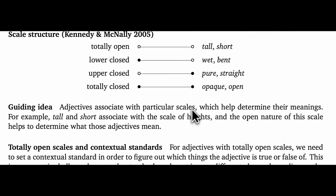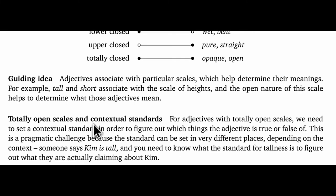So those are the core scale structures. Let's start thinking about how all this will interact with vagueness, starting with the adjectives that have totally open scales, like tall and fast. For the totally open cases, we need to set a contextual standard in order to figure out which things the adjective is true of and which things it's false of in that context. And this is a pragmatic challenge because the standard can be set in very different places depending on context. Someone who says Kim is tall, well, you need to know what the standard for tallness is to figure out what they're actually claiming about Kim. And this is what we saw before with George the Tortoise and Usain Bolt. Very different standards for speediness for tortoises and for humans. So, bottom line, for the totally open cases, context is absolutely crucial. It's our only hope for setting a standard and then making truth value judgments.